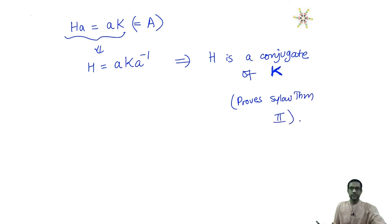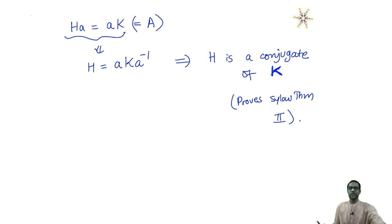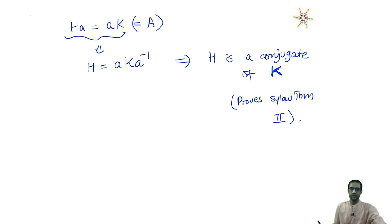As you see, the Sylow theorems are all instances of just one basic principle: a P-group acting on a set whose cardinality is not divisible by P will have to act by fixed points. This property characterizes P-groups in the sense that the converse is also true. The converse is what was used in Sylow 1, and the forward principle is what is used in the proof of Sylow 2. Next time we will prove Sylow theorem number 3, which is again an application of the same principle.